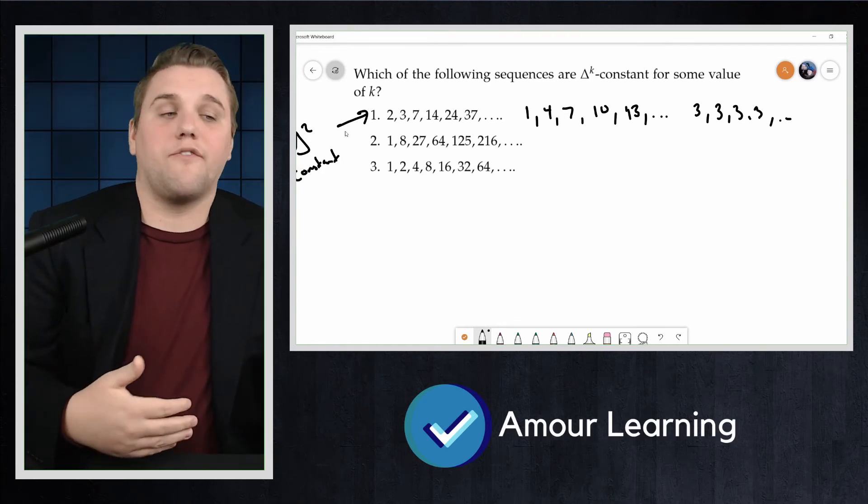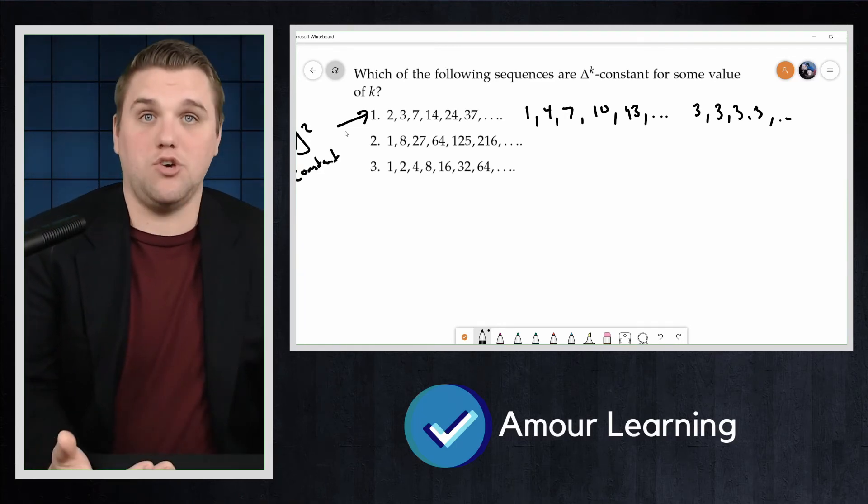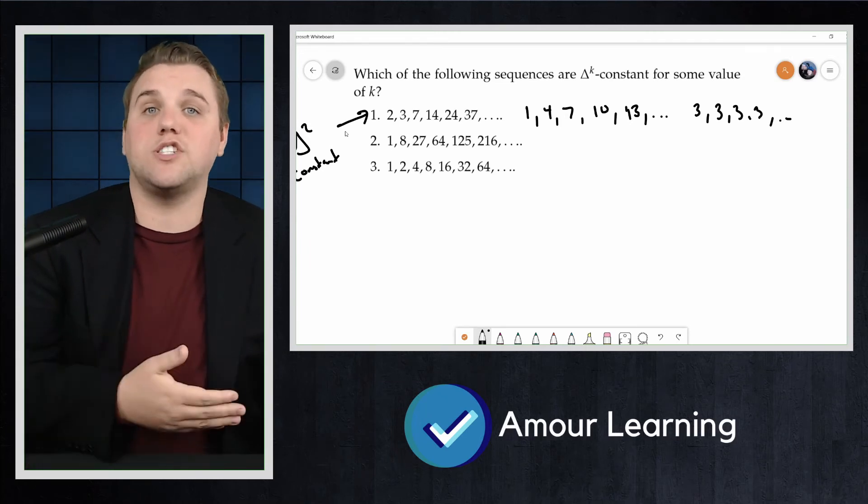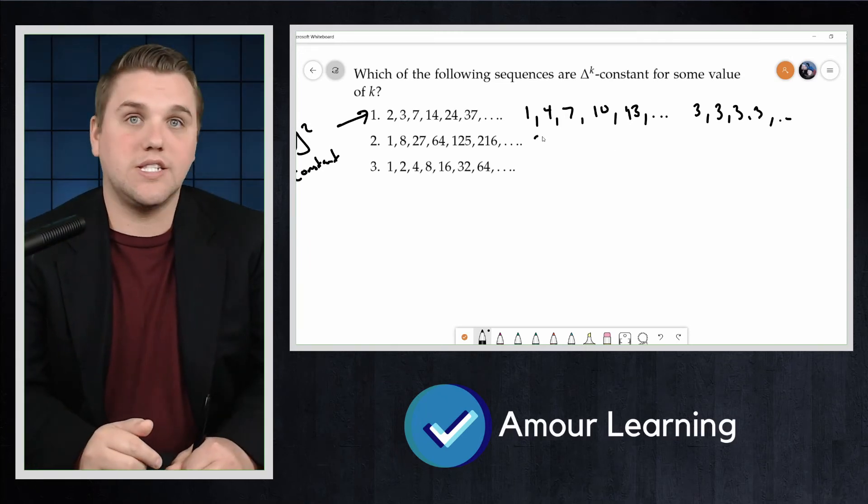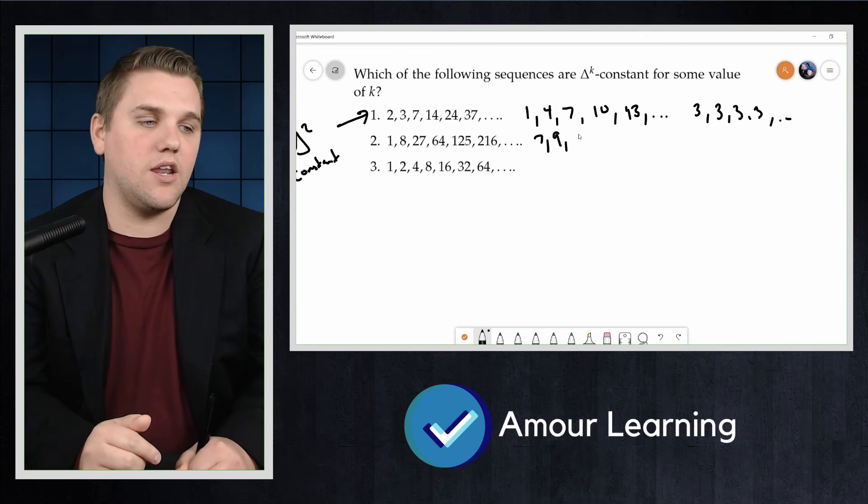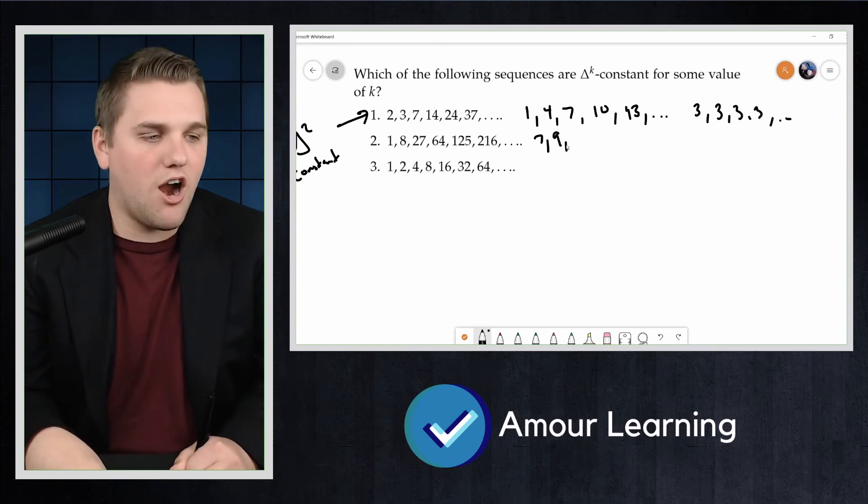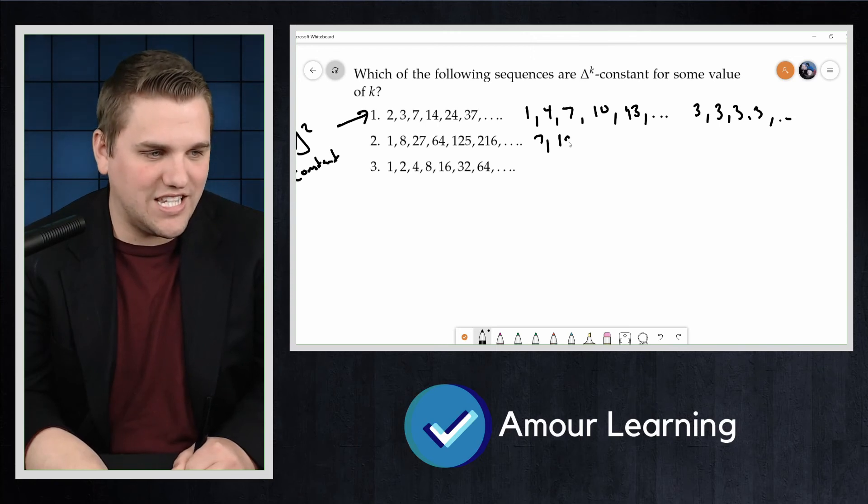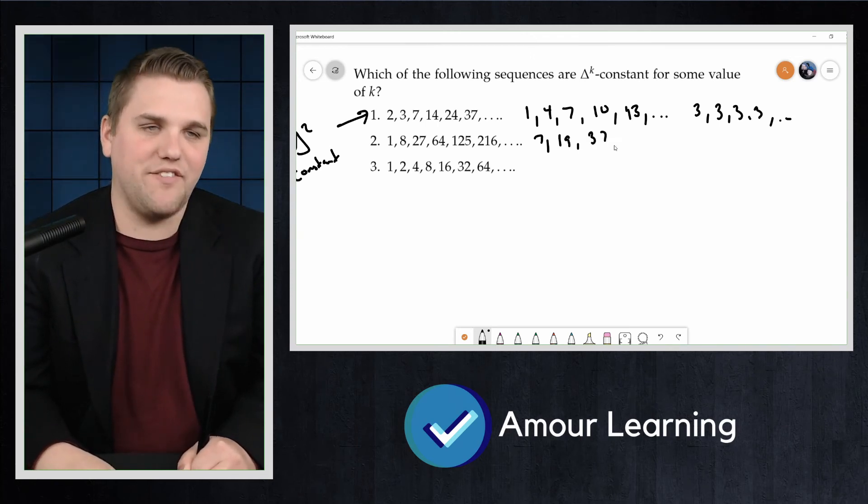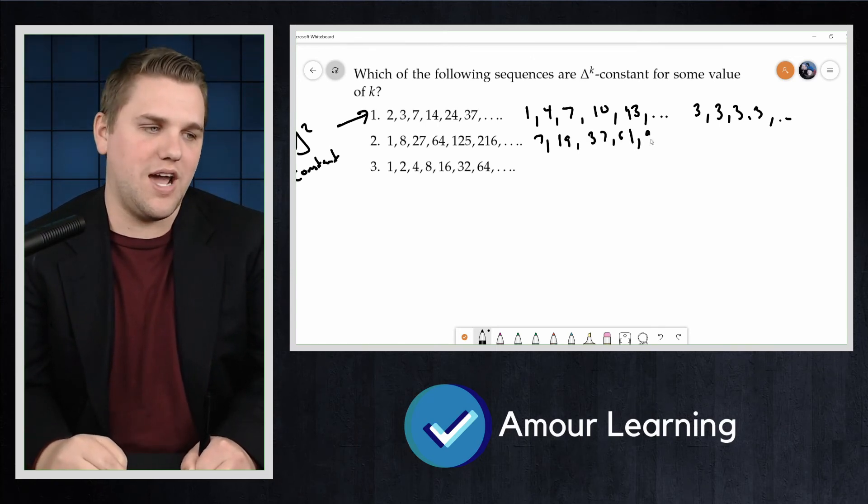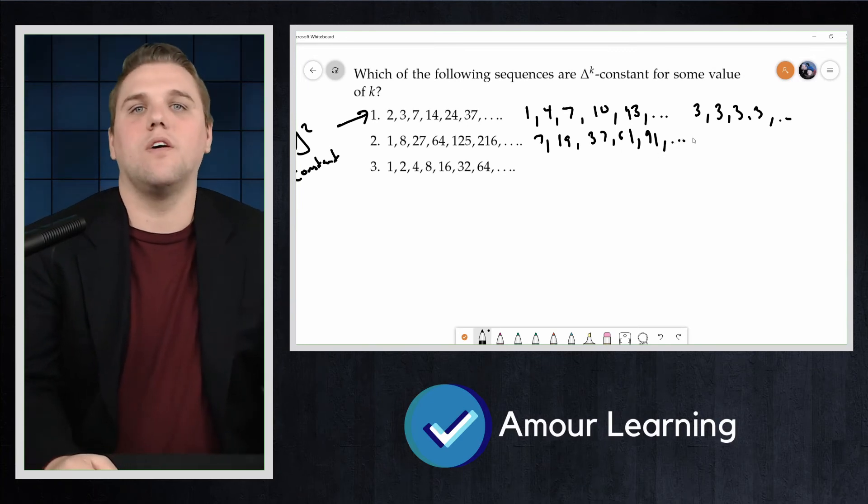Okay, for number 2, these are perfect cubes. The sequence of first differences is 7, 19, 37, 61, 91, and so forth.